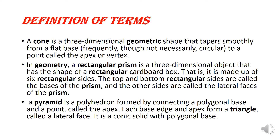A pyramid is a polyhedron formed by connecting a polygonal base and a point called the apex. Each base edge and apex form a triangle called the lateral face. It is a conic solid with a polygonal base.